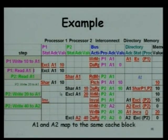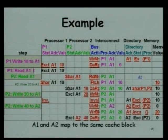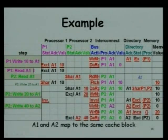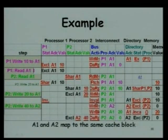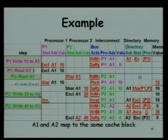Why is writing 20 to A1 a write miss if the data was already available with P2? The state was shared. When P2 wants to write, it must generate a write miss to indicate it wants exclusive access, so those holding it in shared state — including P1 — should be invalidated. A2 and A1 are different blocks, which is why all those actions took place; if they were the same block, nothing additional would have happened.